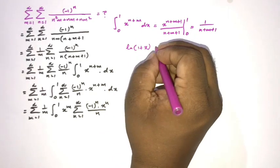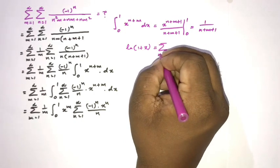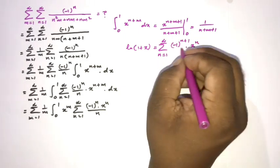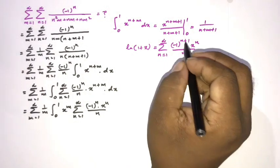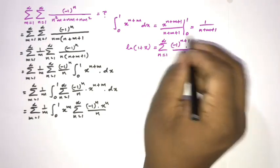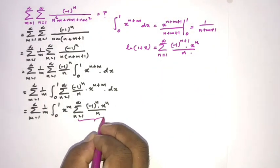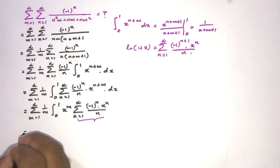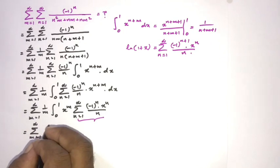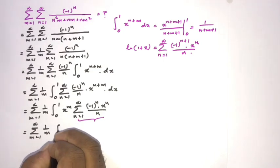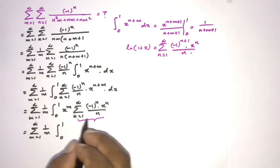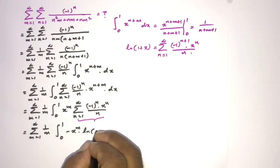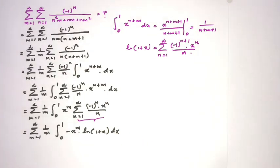We recall the Maclaurin series: ln(1+x) = sum from n=1 to infinity of (-1)^(n+1) x^n / n. Since our sum has (-1)^n instead of (-1)^(n+1), our inner sum equals -ln(1+x). So we now have the sum over m from 1 to infinity of 1/m times the integral from 0 to 1 of -x^m · ln(1+x) dx.